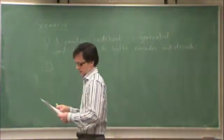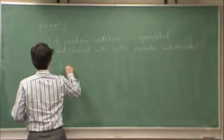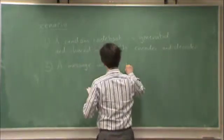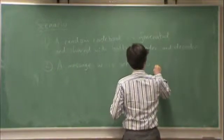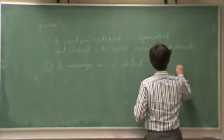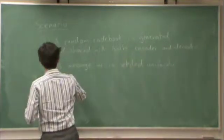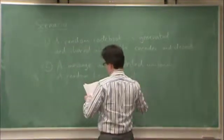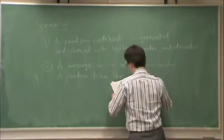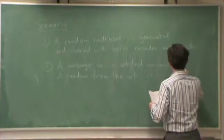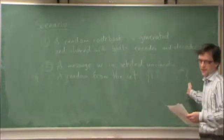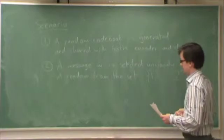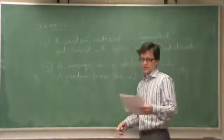Second, a message W is selected uniformly at random from the set 1, 2, and so on up to 2 to the nR. So remember this was my set of possible messages, which I represent with the integers 1, 2, and so on up to 2 to the nR. And basically, I'm going to pick one of those uniformly at random and transmit it.